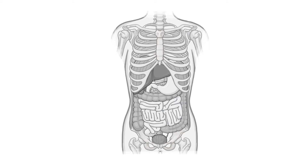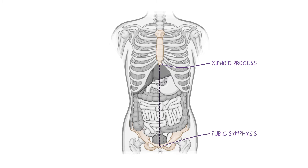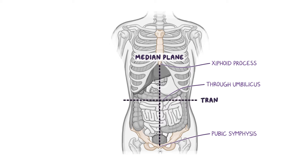Let's start with the quadrants. To get those four quadrants, imagine a line running down from the xiphoid process, or tip of the sternum, all the way down to the pubic symphysis. This line is the median plane and divides the abdomen into a left and a right half. The second imaginary line goes straight through the belly button, or umbilicus, from left to right, creating the transverse or transumbilical plane, and divides the abdomen into an upper and lower half.